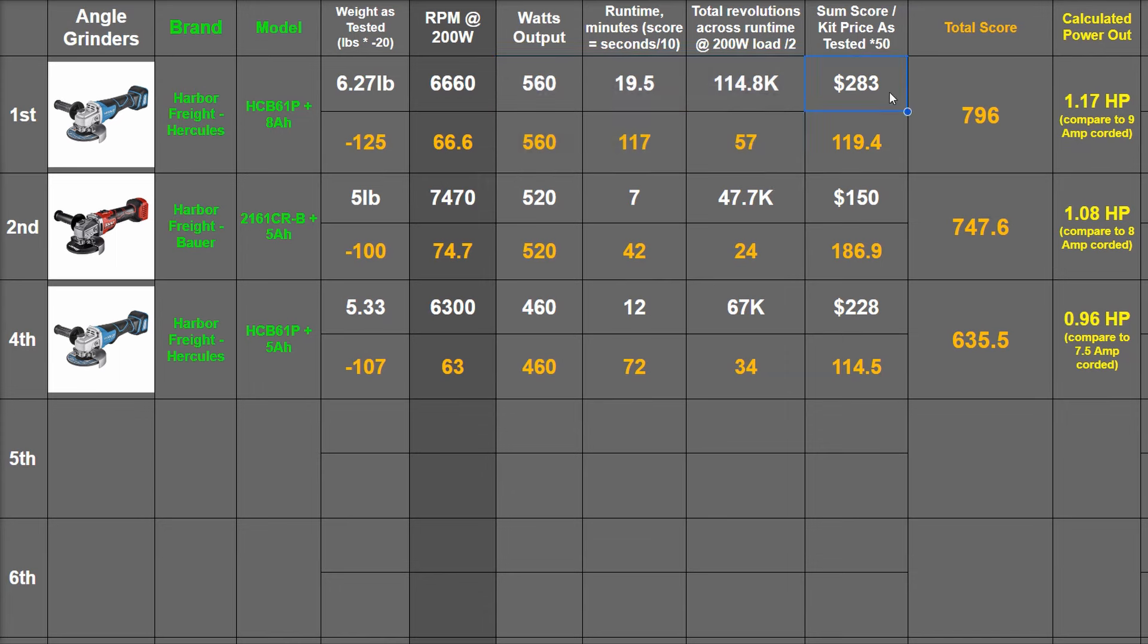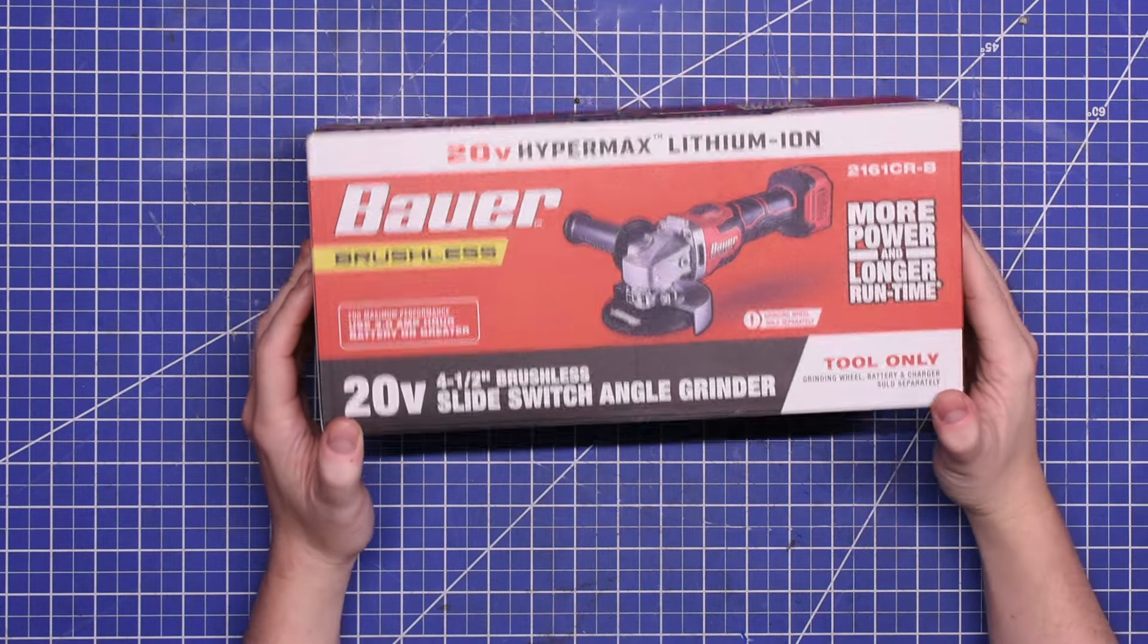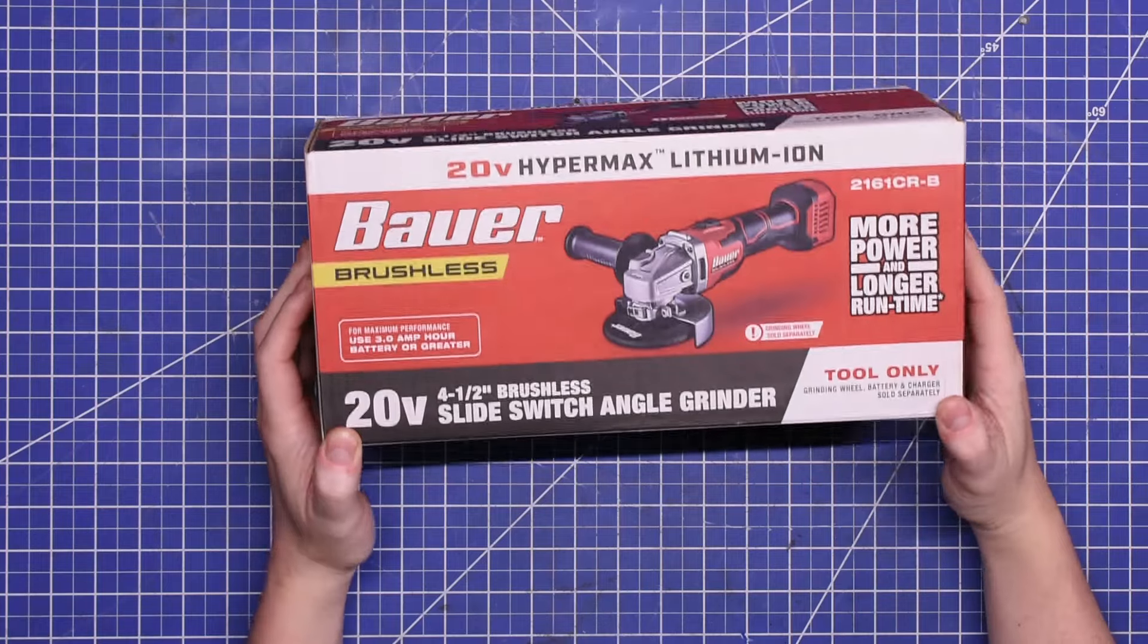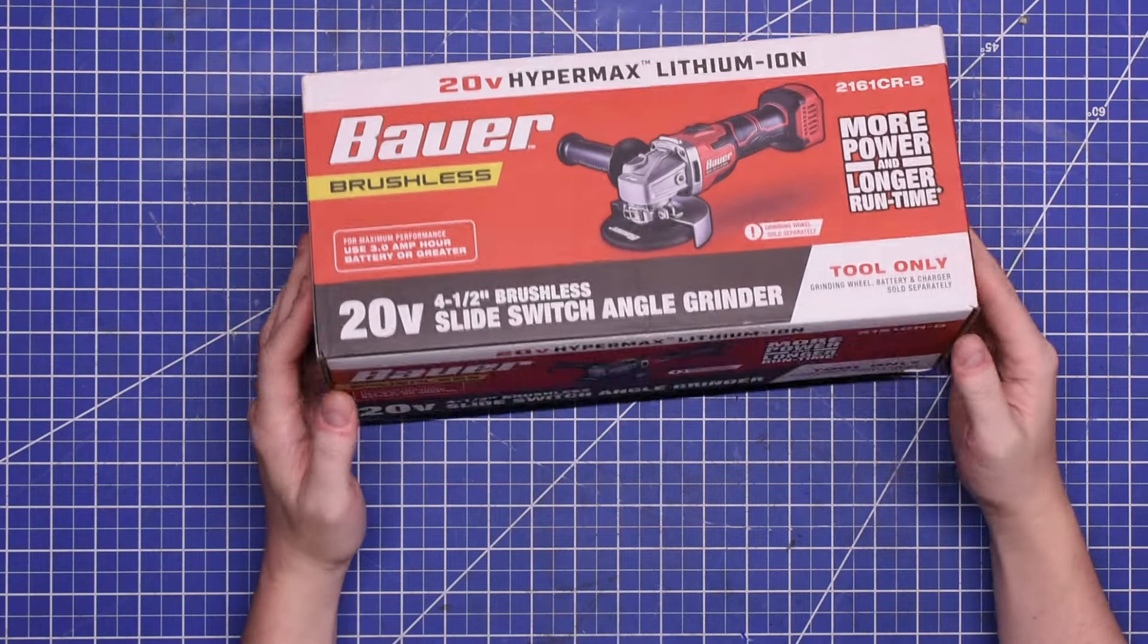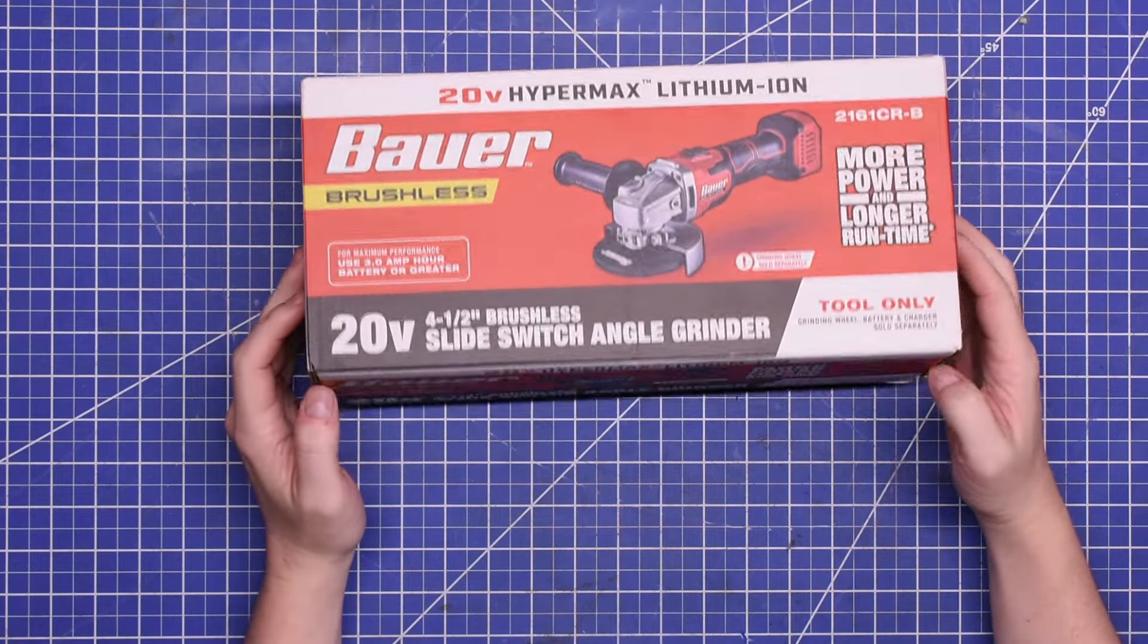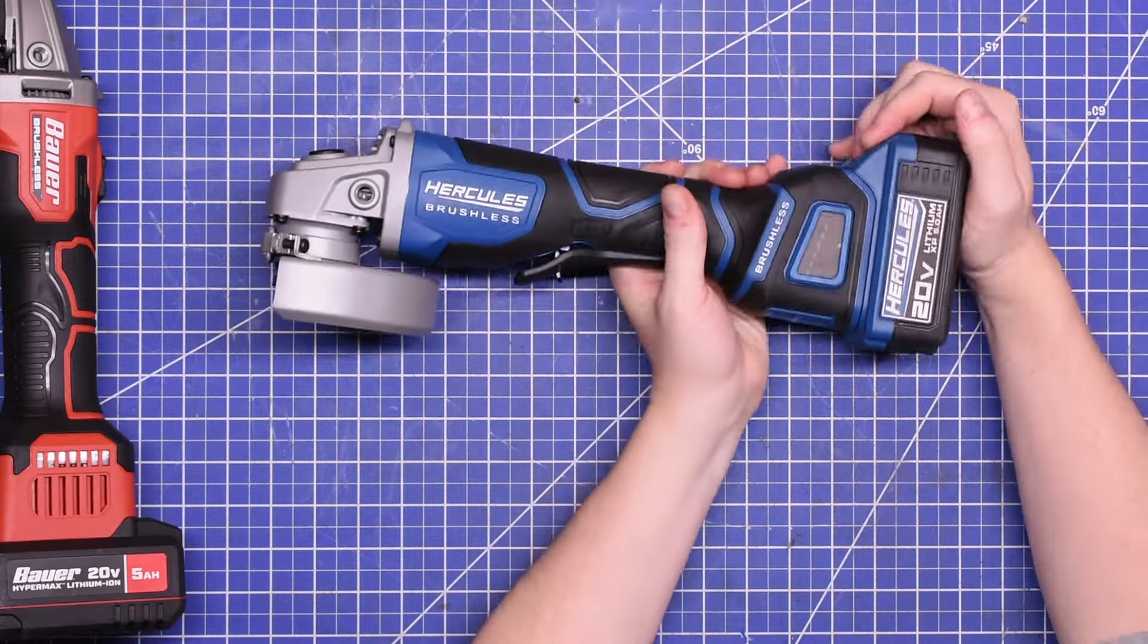For entry level pricing, it's hard to not like the Bauer, especially since it brings 8 amp corded type power and less vibration than the corded model. We'll have to see how it holds up in the long term. And the Hercules—man, would not have guessed that a 5 amp hour battery would make it not worth it and the 8 amp hour it totally is. Hard to know with those things without really dynoing them.